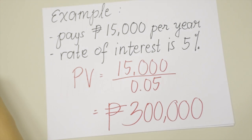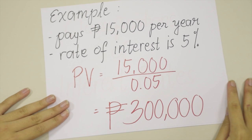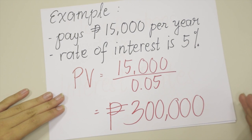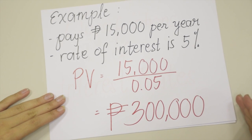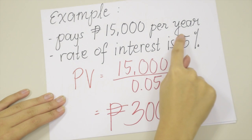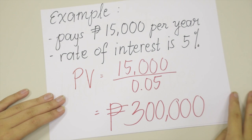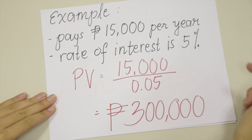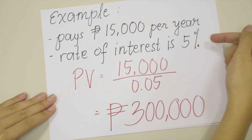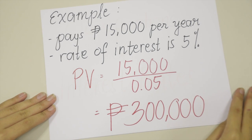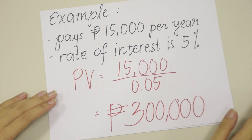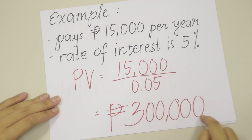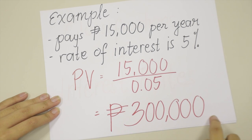An example of a perpetuity is when you want to create an endowment to fund a football scholarship which pays 15,000 pesos per year. How much money must be set aside today if the rate of interest is 5%? Plugging in the values: 15,000 pesos divided by 0.05, which equals 300,000 pesos.